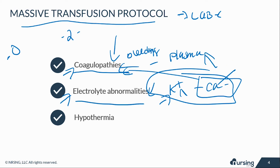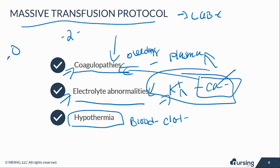You have got to watch electrolytes when somebody is having an MTP, and also watch for hypothermia. Remember that blood is cold — they keep it in the freezer down in the lab. When you don't have time for them to warm it up, you usually get it cold. There are some machines that can warm it up really quickly as you're giving it to patients, but depending on how fast you're giving it, you can cause hypothermia. So you've got to watch out for that.